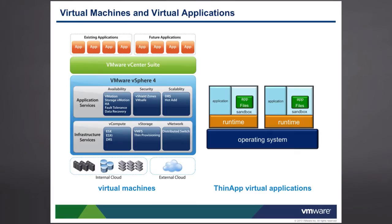One thing to ensure is that we don't confuse a virtual app with a virtual machine. A virtual machine is basically an abstraction of the four food groups: CPU, memory, network, and disk. A virtual app is an actual application put in a special container to keep it separate from other applications. Within that container it sees what it believes to be the full registry and file structure, which allows running various versions of applications together on the same operating system.